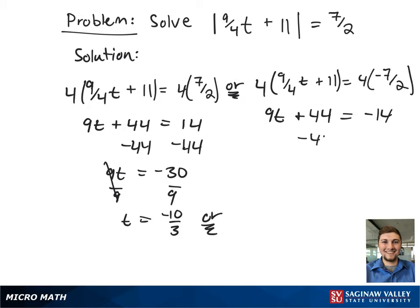We subtract 44 from both sides again to get rid of the single term, and this gives 9t equals negative 58. Divide both sides by 9 to get t by itself, and this gives t equals negative 58 ninths.